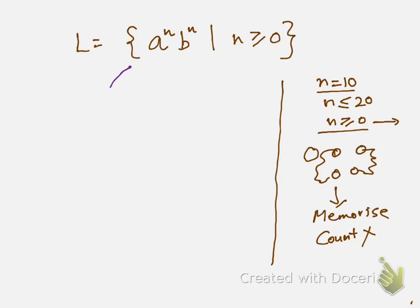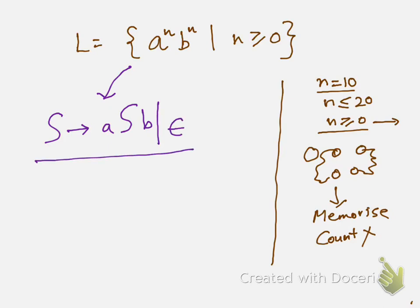However, we have seen a context-free grammar for the language a^n b^n. With just this single production rule, this grammar can generate all the strings in the language a^n b^n.